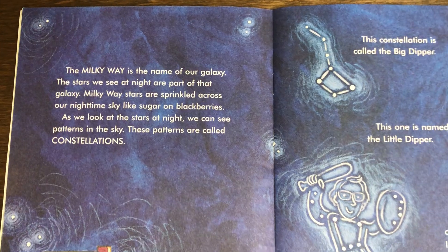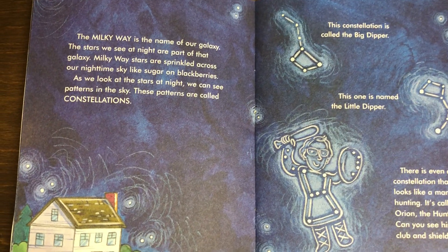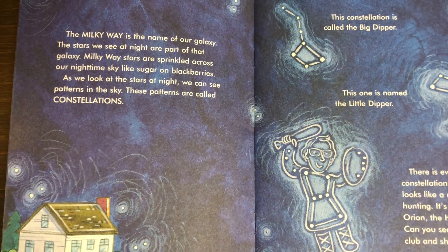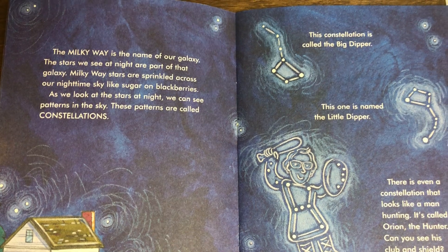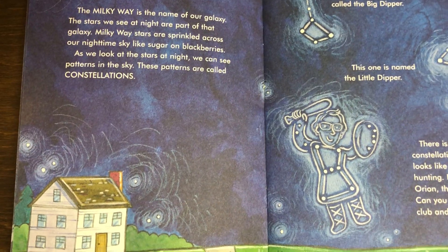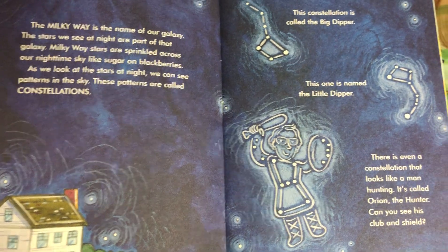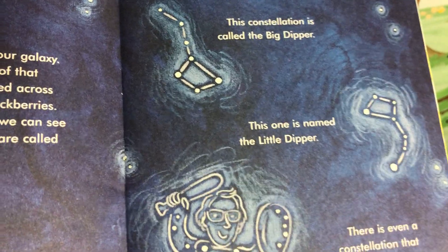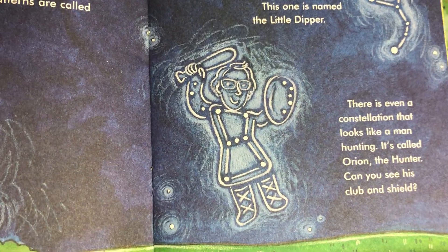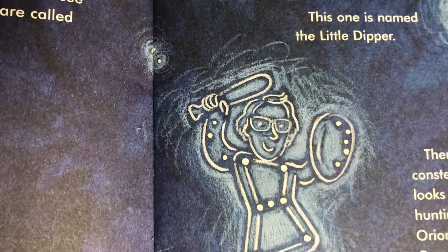The Milky Way is the name of our galaxy. The stars we see at night are a part of that galaxy. Milky Way stars are sprinkled across our nighttime sky like sugar on blackberries. As we look at the stars at night, we can see patterns in the sky — these patterns are called constellations. The Big Dipper, the Little Dipper — there's even one called Orion the Hunter. Can you see his club and shield?